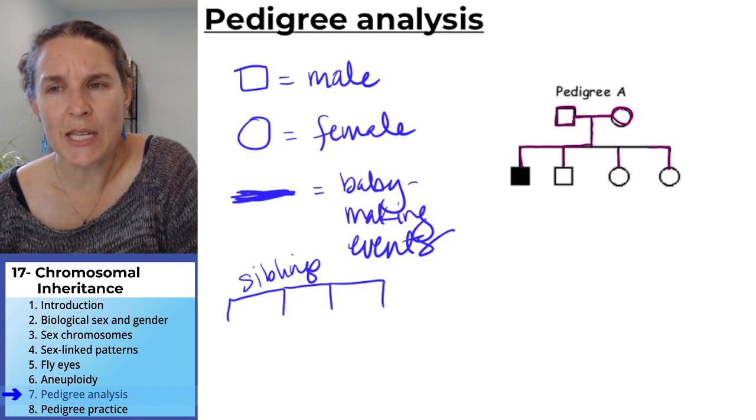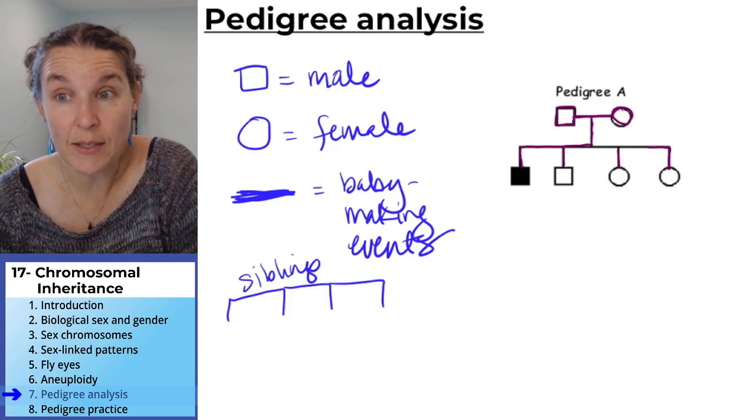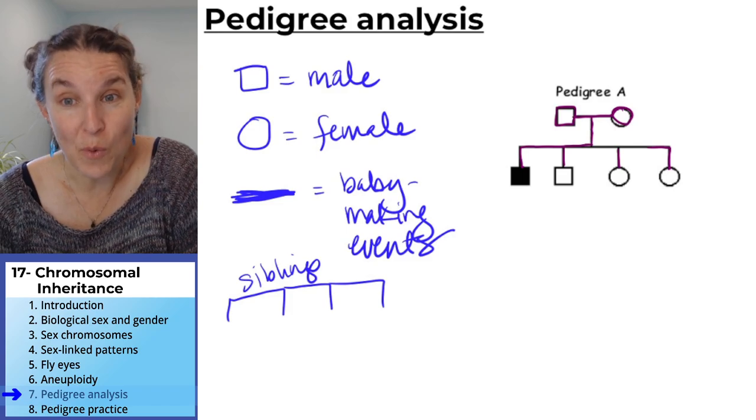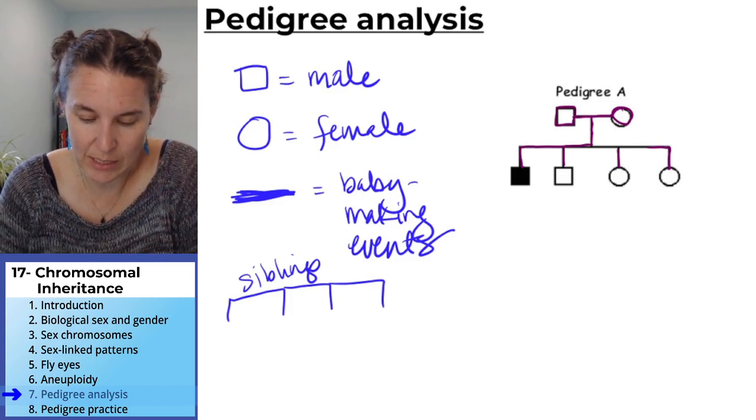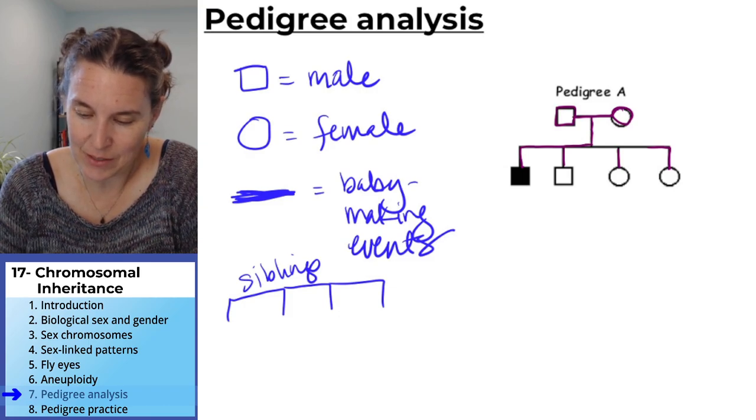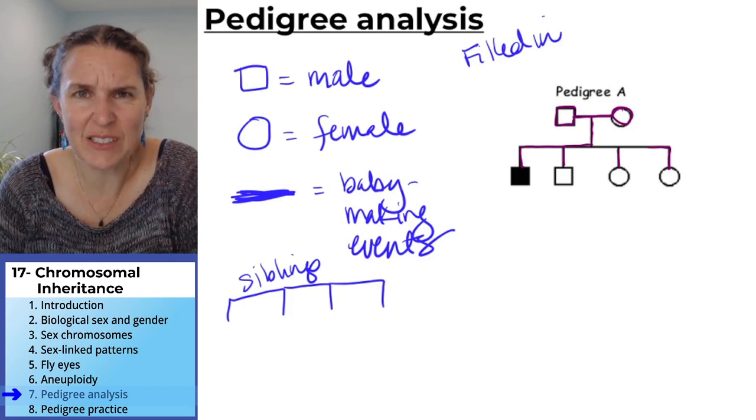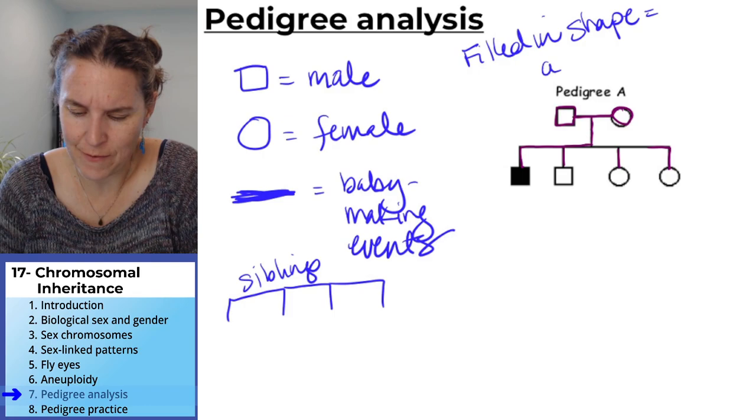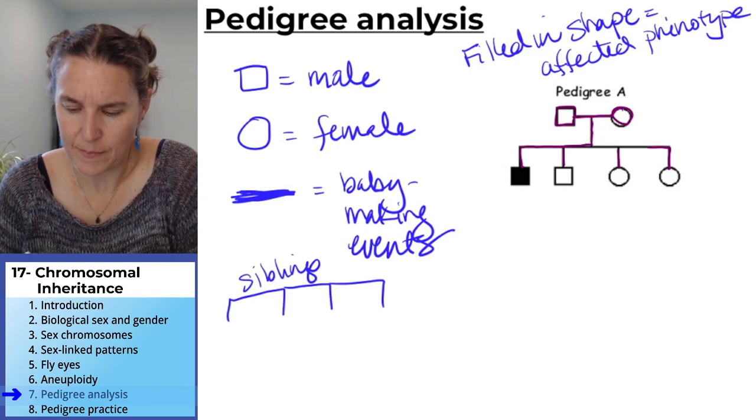So some things that we could say. The top two people made two boys and two girls. One of the boys is affected. So a filled in, any filled in shape equals an affected phenotype.